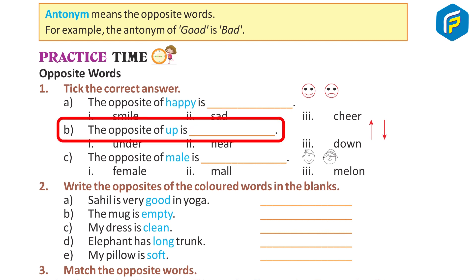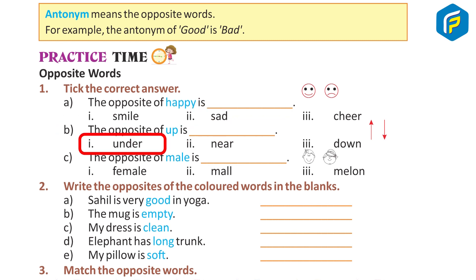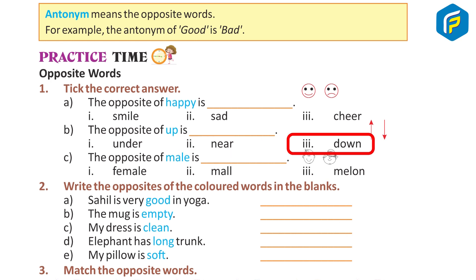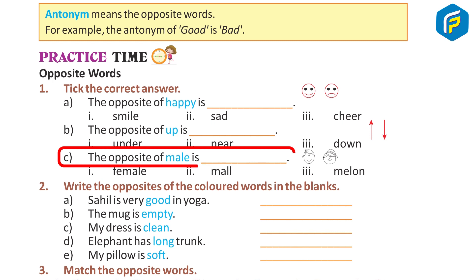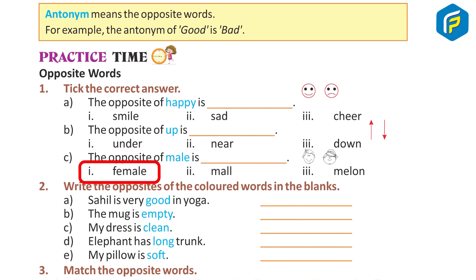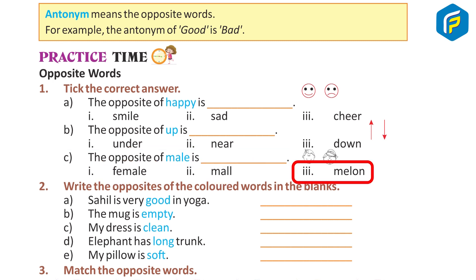The opposite of 'up' is: under, near, down. Answer: down. C — the opposite of 'male' is: female, mall, melon. Answer: female.